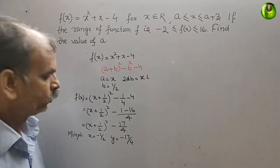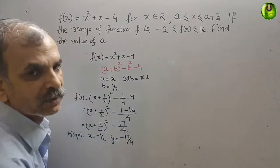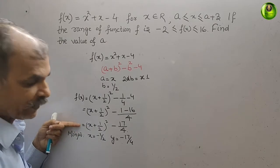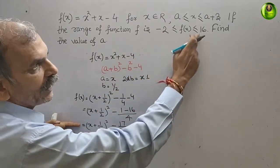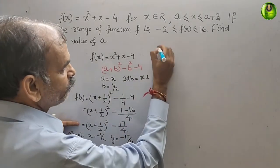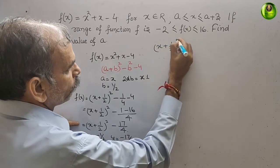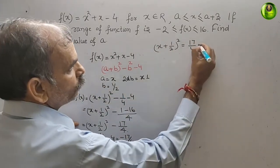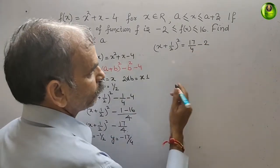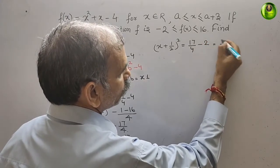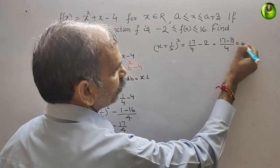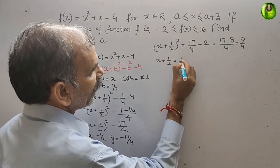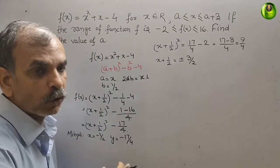Since the minimum point x = -1/2 means the range is not symmetric, we solve case by case. First, set f(x) = -2: (x + 1/2)² - 17/4 = -2, so (x + 1/2)² = 17/4 - 8/4 = 9/4.